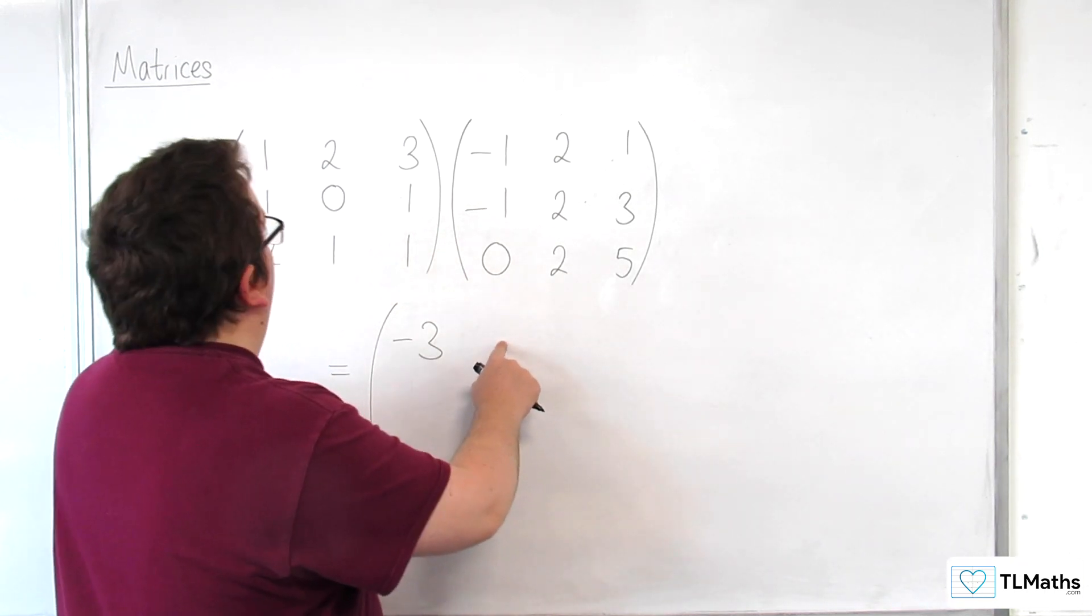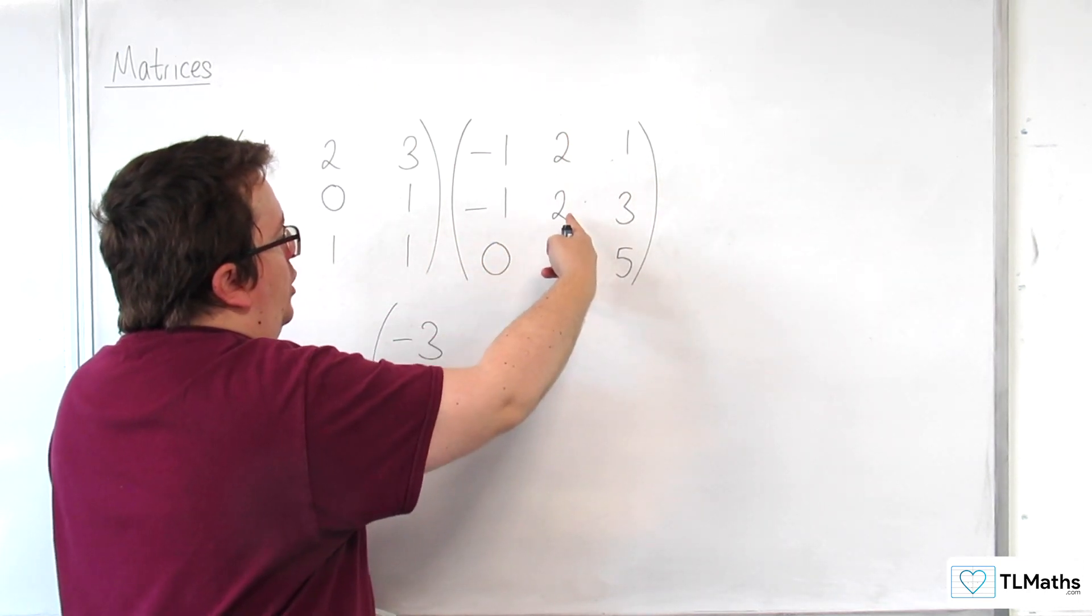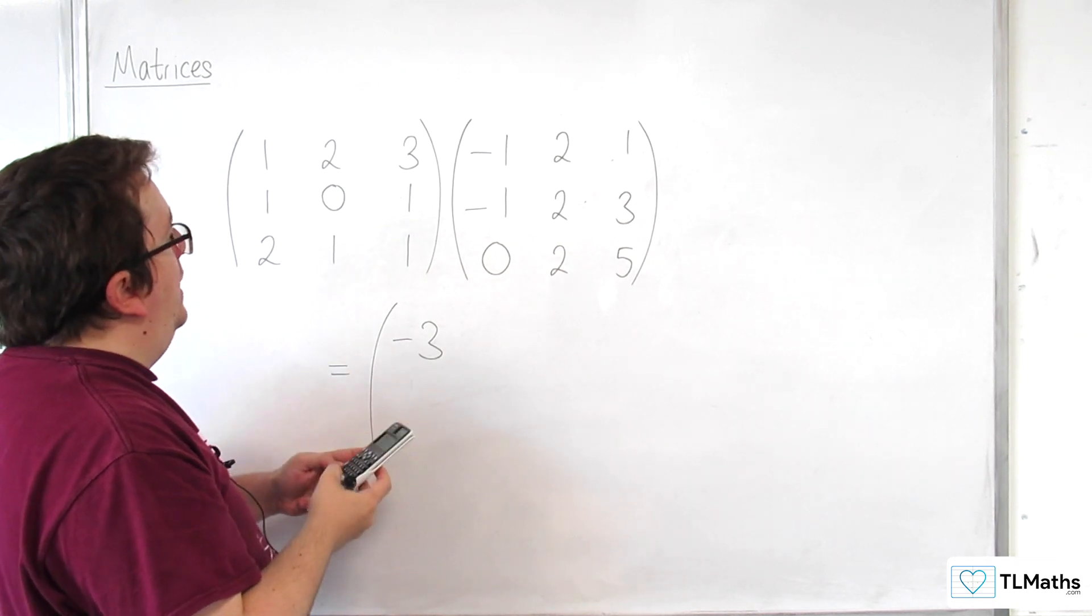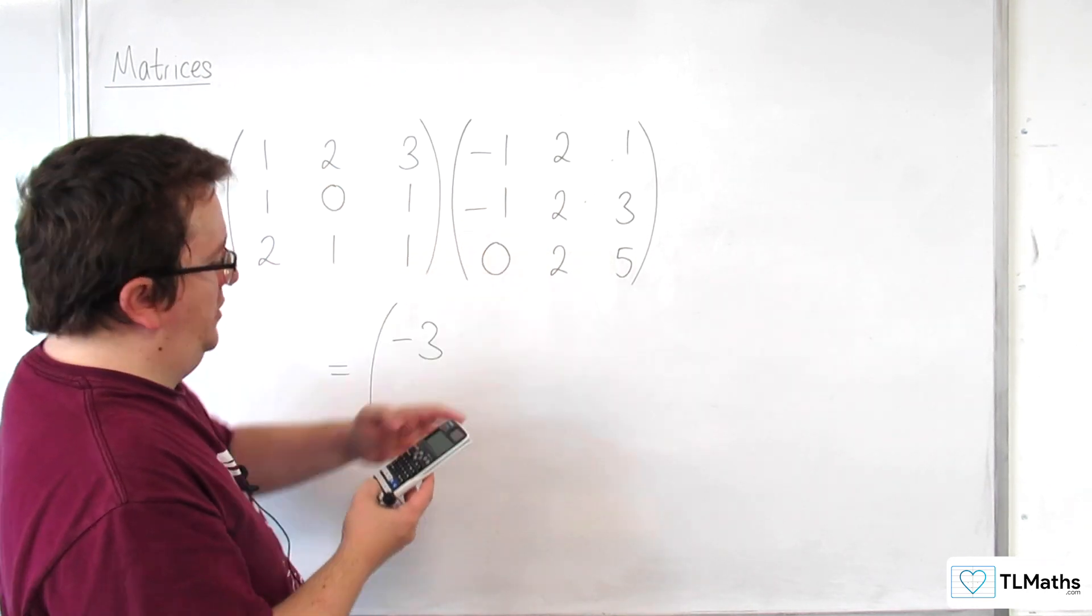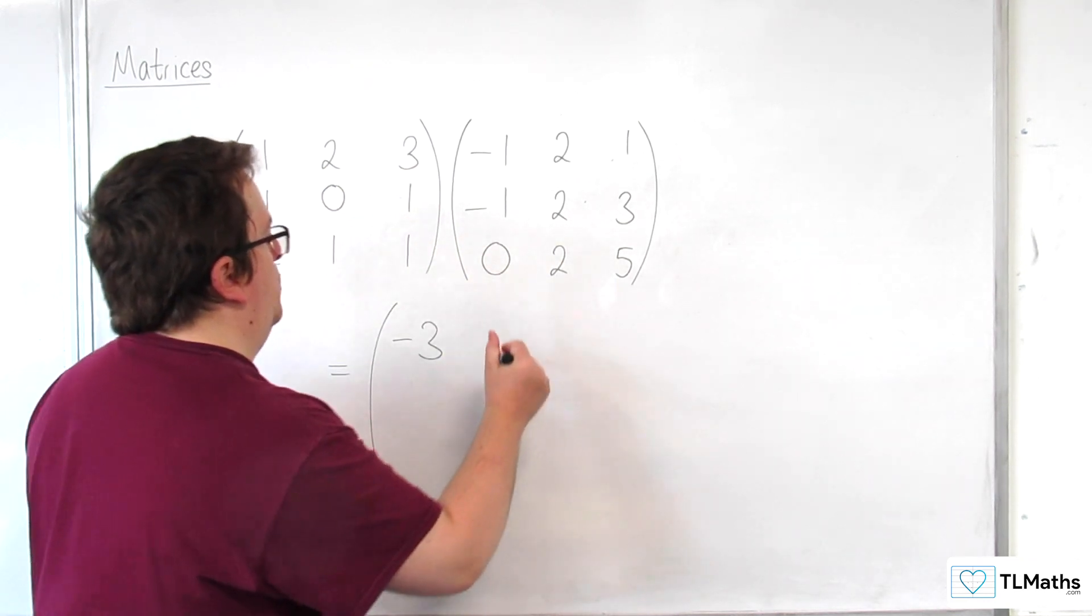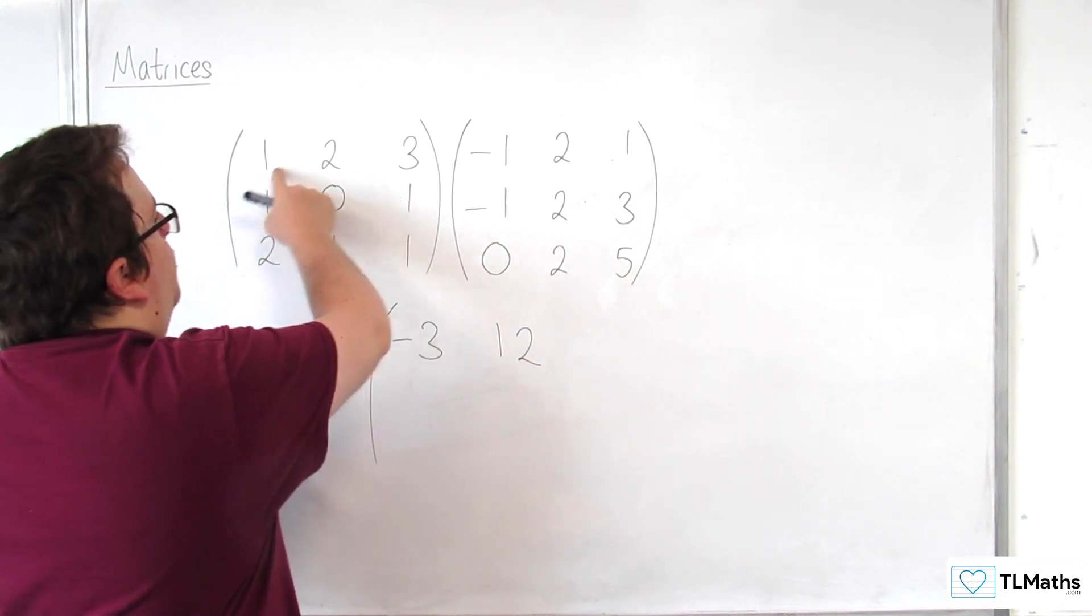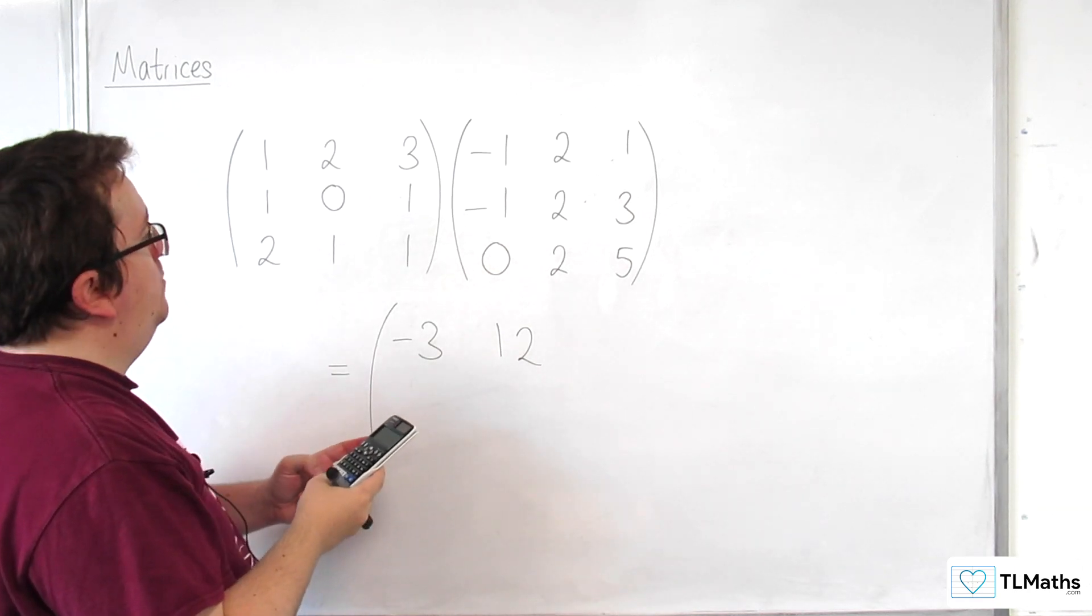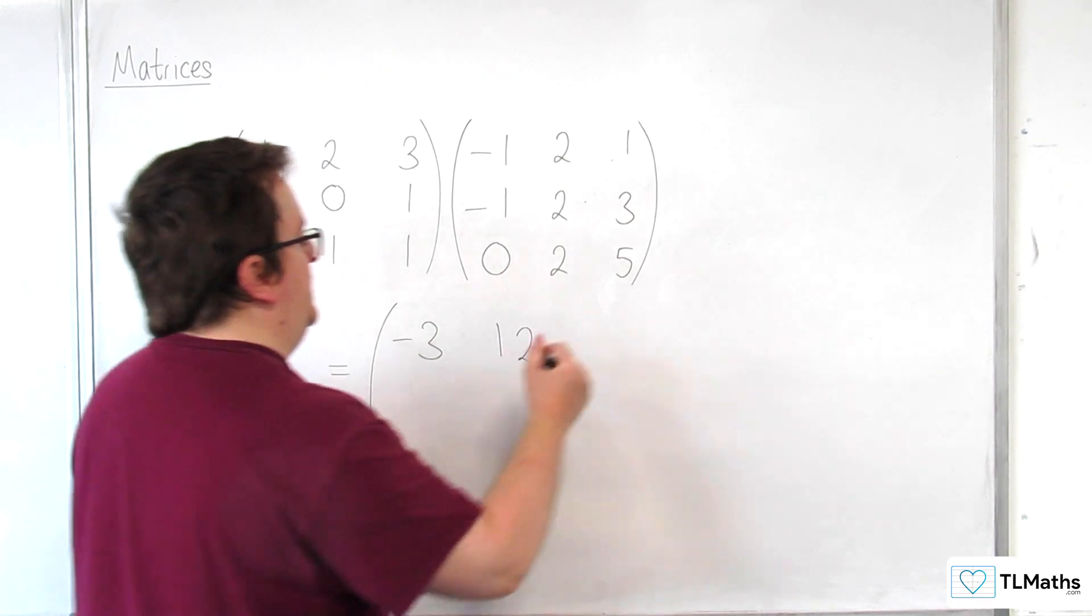So, for the next one along, we're going to do the top row, multiplied by the second column. So, we get 1 times 2, plus 2 times 2, plus 3 times 2, and that gets us 12. Then, we've got the top row times the final column. So, we get 1 times 1, plus 2 times 3, plus 3 times 5, and that's 22.